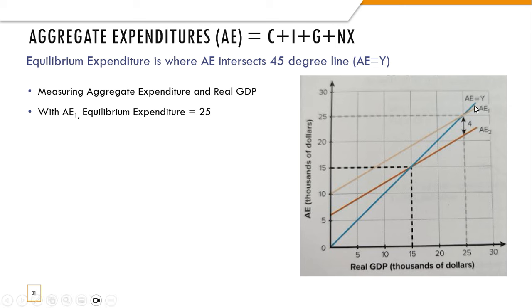We have AE1, which is right here—that's aggregate expenditures one. So that's C plus I plus G plus net exports. Where that line intersects this 45-degree line, that's going to be our equilibrium expenditure. That's where we're buying the same amount as we're producing, which is 25, in this case thousands of dollars. Now let's look at this other one, AE2.